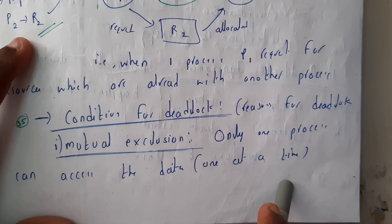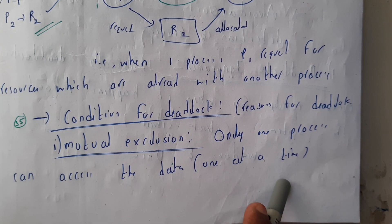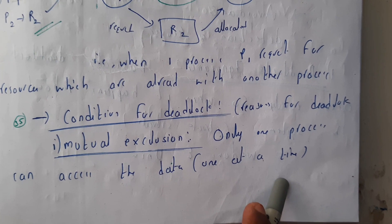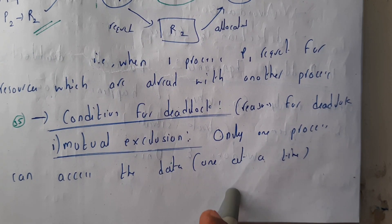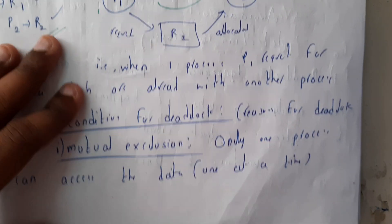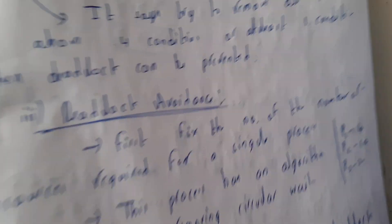If only one process can access a resource at a time, it takes a really long time for N number of processes to access that single resource. This is one reason for deadlock, and there are four reasons in total.